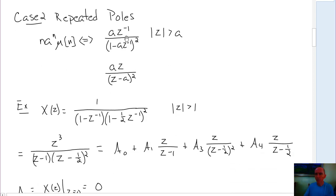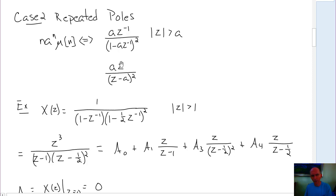Now, in the case that we have repeated poles, we have an additional term. I'm going to give you this inverse for the moment; later on we'll actually calculate it in class. So if we have 1 over 1 minus a z to the minus 1 squared, or z squared over z minus a squared, the inverse of this, as long as the magnitude of z is greater than a, is going to be n times a to the n times mu of n.